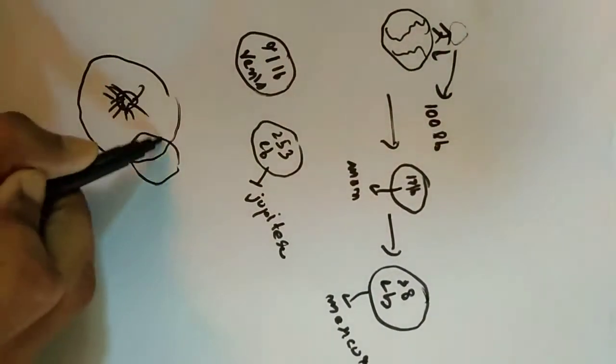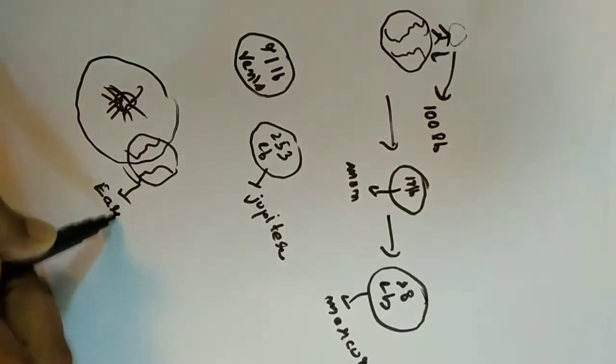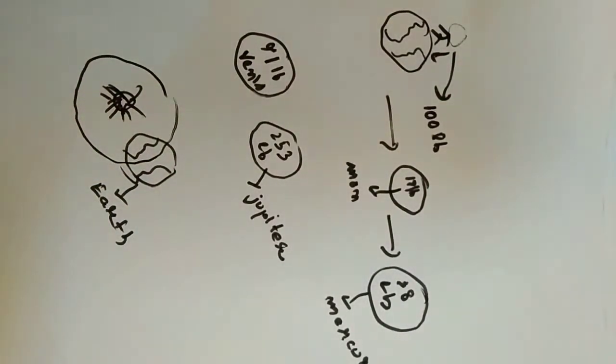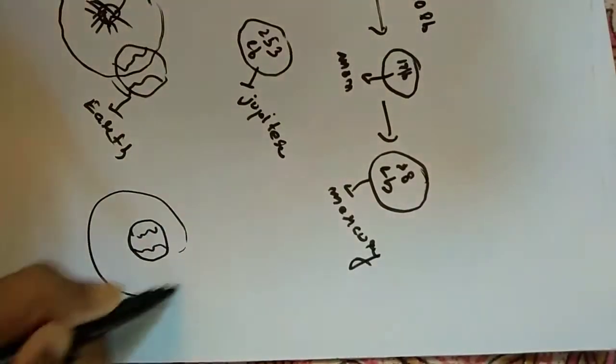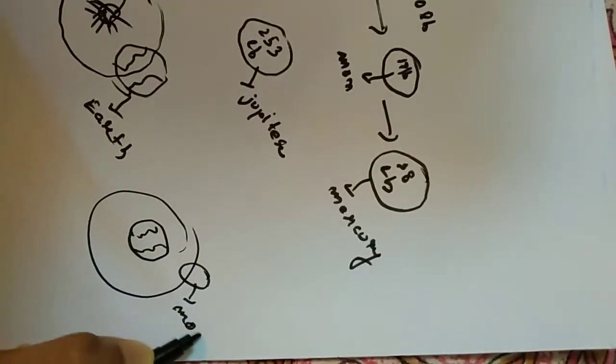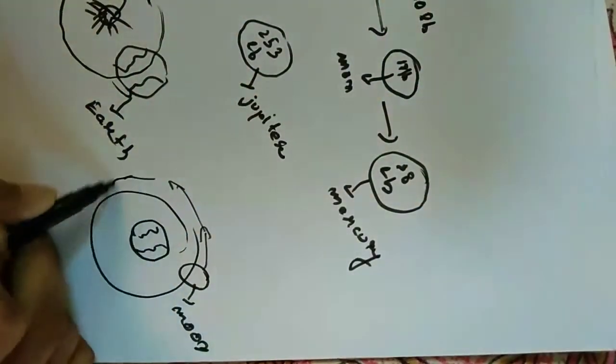Gravity is what holds the planets in orbit around the sun and what keeps the moon in orbit around Earth. The gravitational pull of the moon pulls the seas towards it, causing the ocean tides.